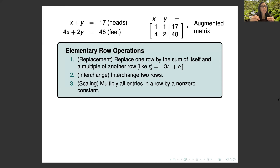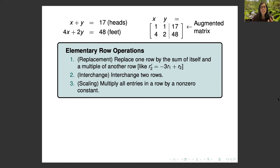We're going to take that augmented matrix and put it into something called row echelon form through a process called Gaussian elimination. This process employs three elementary row operations that will not change the solution set. The elementary row operations are: replacement — replace one row by the sum of itself and a multiple of another row; interchange — switch two rows; or scaling — multiply an entire row by a non-zero constant, which is equivalent to multiplying both sides of an equation by the same non-zero constant.